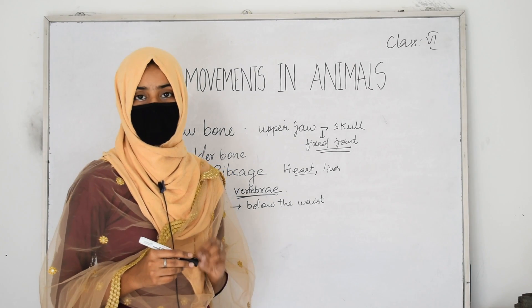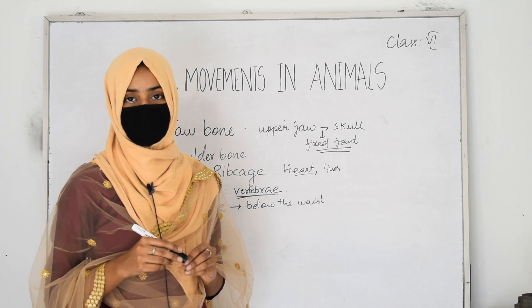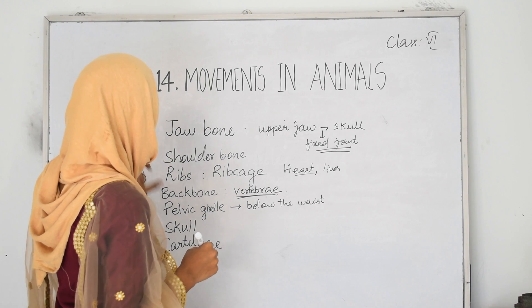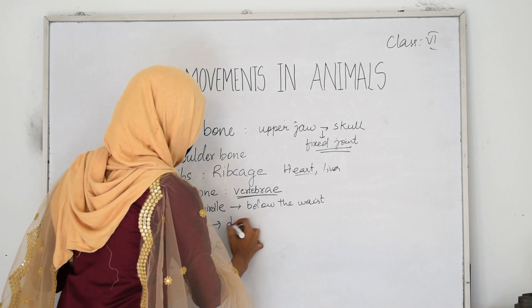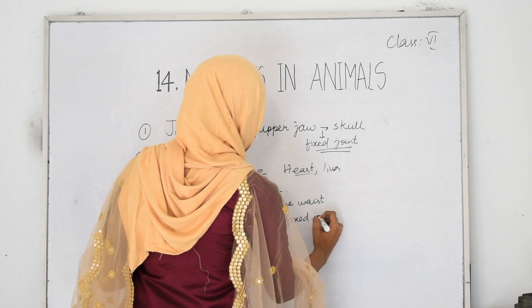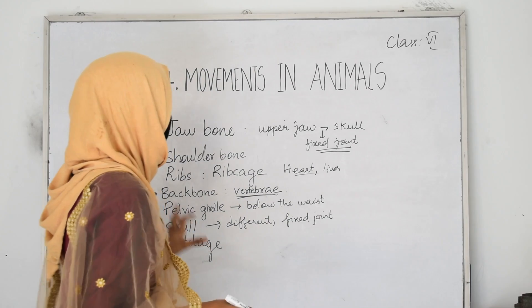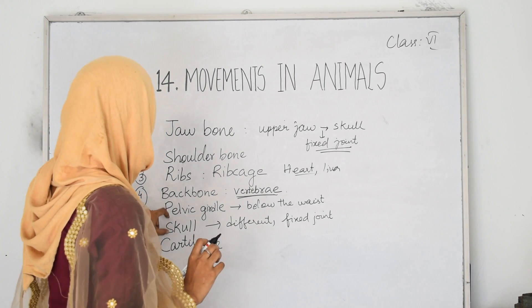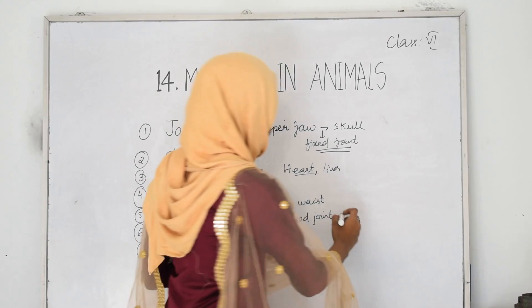The skull is a very important part of our body because the brain is a major organ that needs protection. Skull is a bony structure that protects our brain. It is made up of different bones joined together with a joint called a fixed joint. These bones form an outer covering called the skull, which covers and protects our brain.